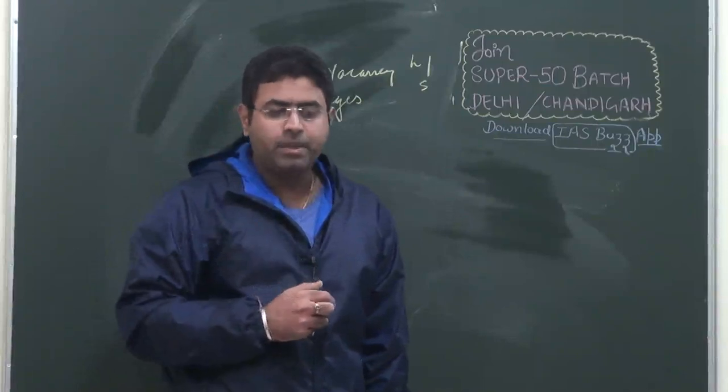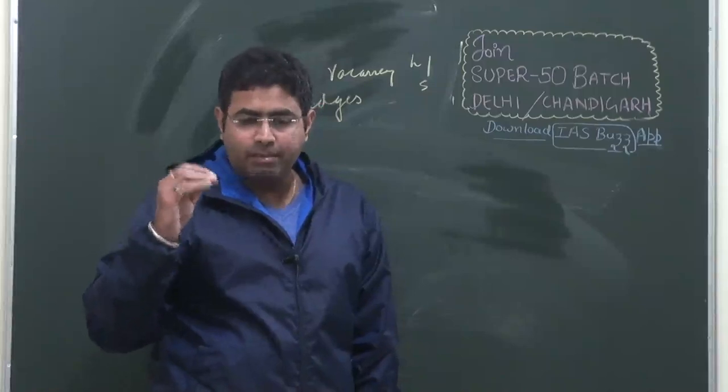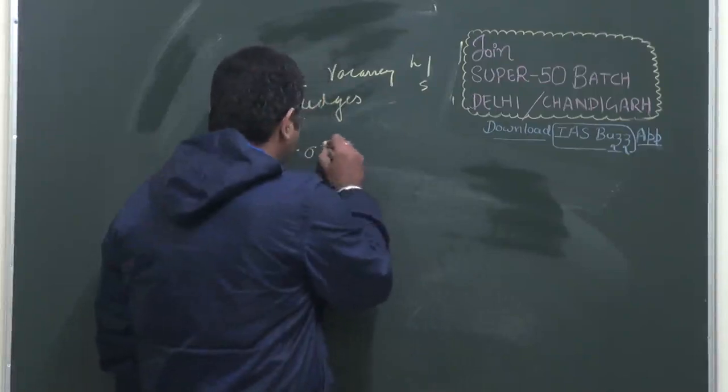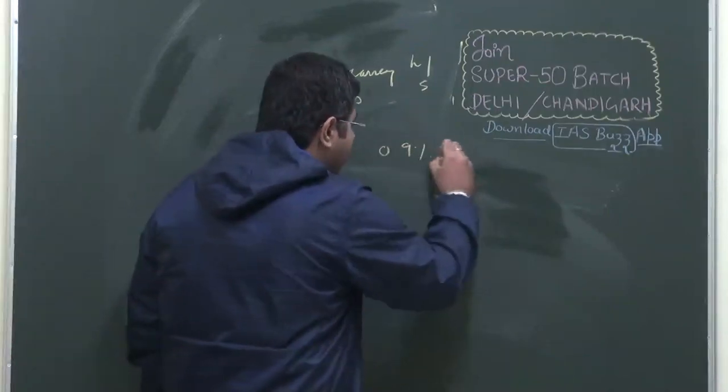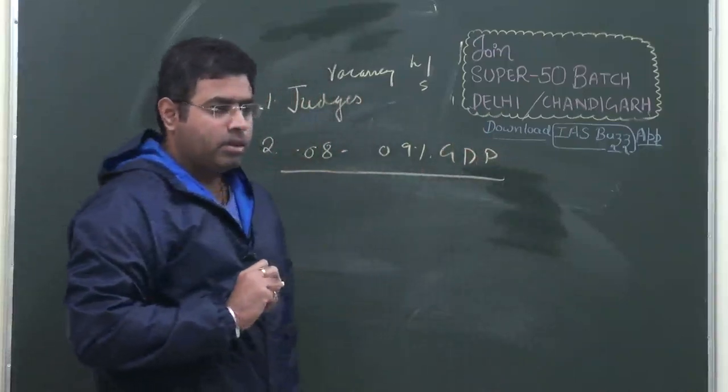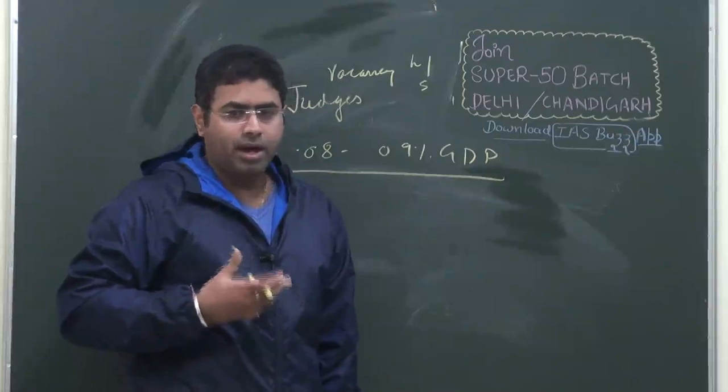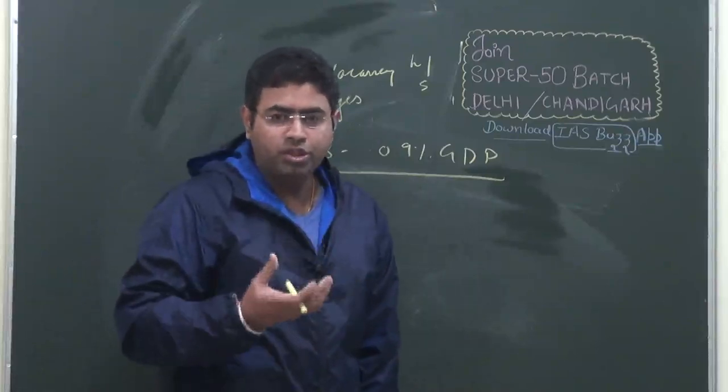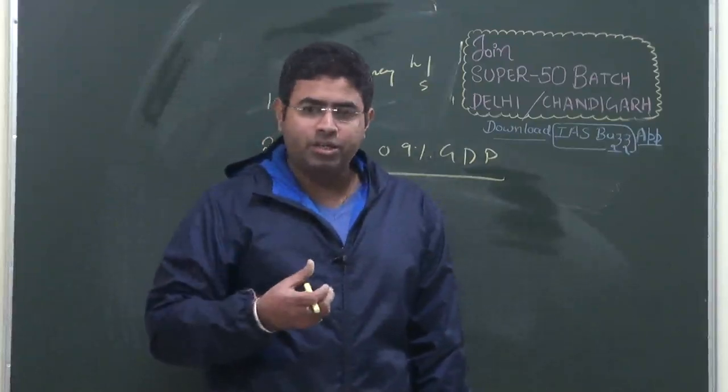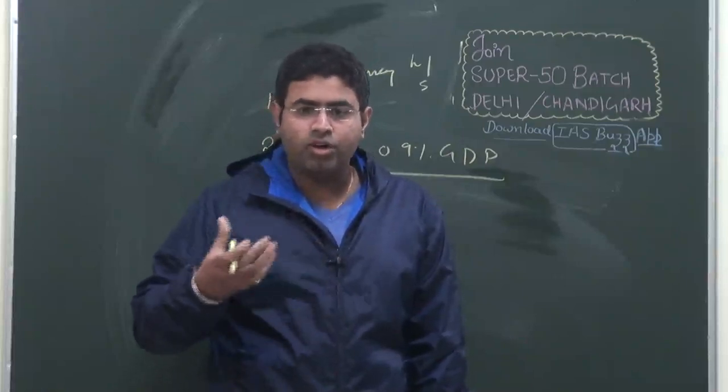The second important thing highlighted in the economic survey is that in India, we spend very little money on transforming the judiciary. It's just 0.08 to 0.09% of GDP that we spend on judiciary. Because very little money is spent, it cannot transform itself. In today's date, the judiciary needs a lot of information technology and infrastructure, but presently we don't have that.